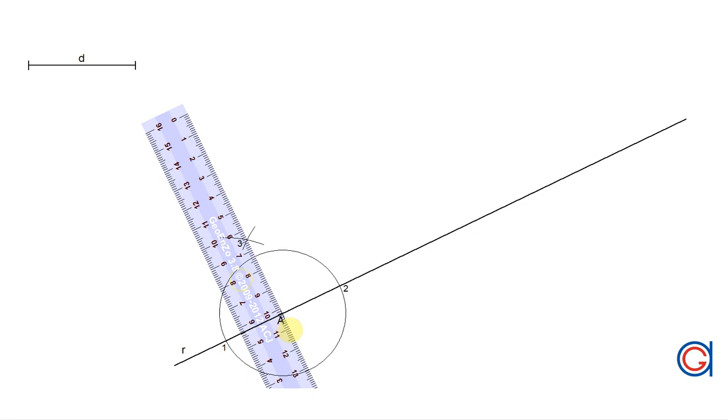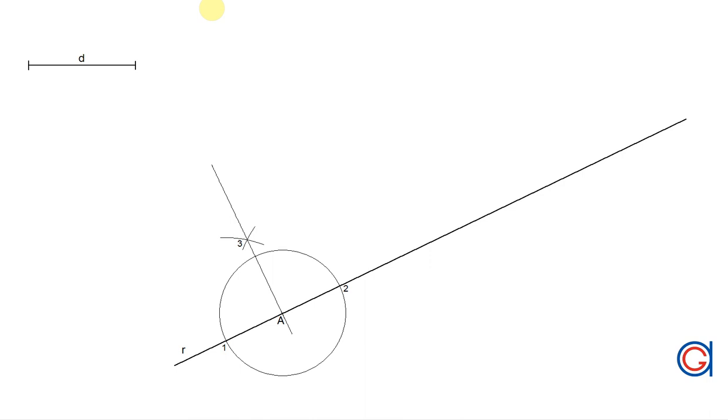Now with a ruler we're going to draw a line from A through point 3 which is perpendicular to the line R and we'll mark it with the symbol of perpendicularity.